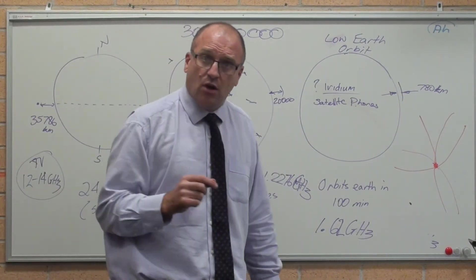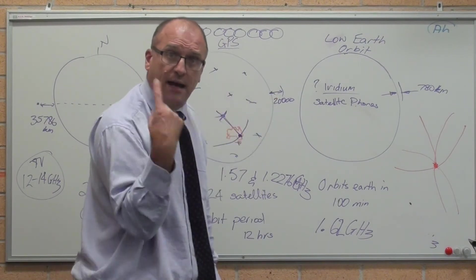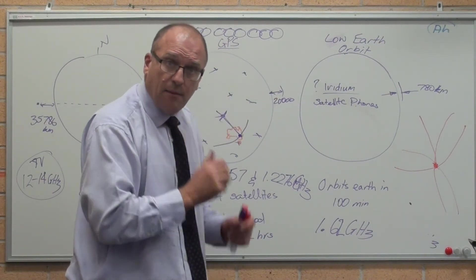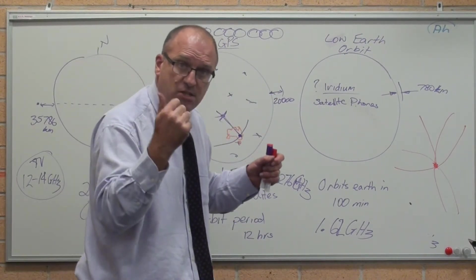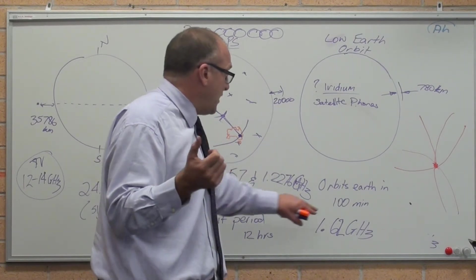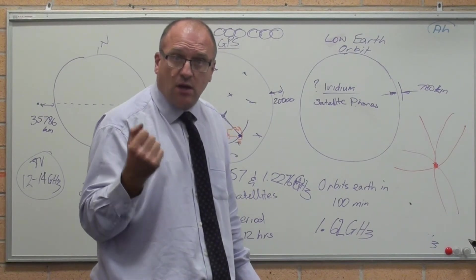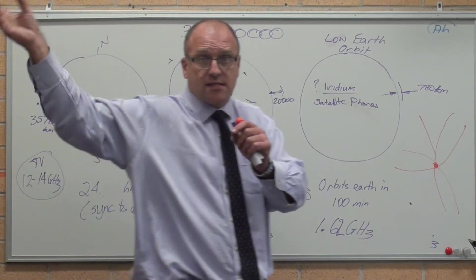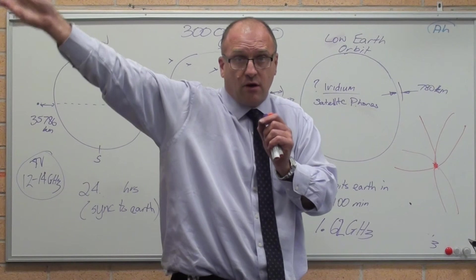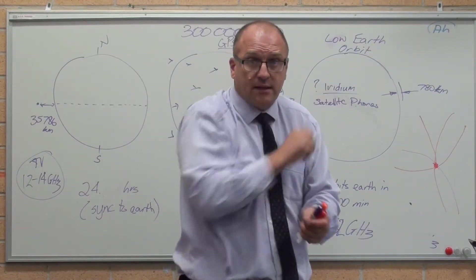Because gravity is so strong there, they need to be travelling really fast to get the centripetal force to hold them in space. So, they orbit the earth every 100 minutes. If you're making a phone call on a satellite phone, in 7 minutes the satellite has gone from being on the horizon there, going over your head, going to the other side.